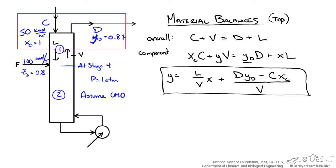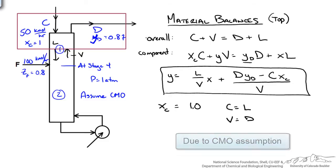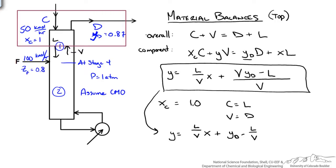This is our operating line for the top part of our column. There are a couple things to distinguish about our specific operating conditions. Our stream C of acetone is saturated liquid and pure acetone, so our mole fraction xC is 1. Furthermore, because it is saturated liquid we could say C equals L. We also know V must equal D. We could use this information in our equation and replace those variables. We have the slope L over V and our intercept is the distillate composition minus our slope. This means at x equals 1, y equals our distillate composition. So we have an intercept on the right side of our McCabe-Thiele diagram.